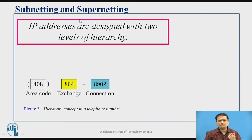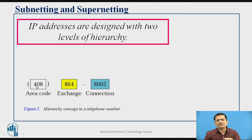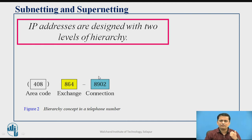Subnetting uses hierarchical addressing, analogous to the telephone system where you have a country code, then an area code or STD code, then the actual number, and possibly an extension. When you put a country code, the network understands the destination belongs to a particular country; within that country, which city; within that city, which connection. This makes it easy to forward or route packets over the network using hierarchical addressing.